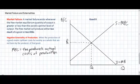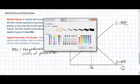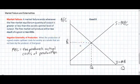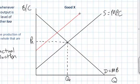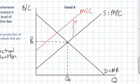A negative externality exists when the social costs of production are greater than the private costs. We can add a second marginal cost curve to our graph, positioned above the marginal private costs of production. This curve we will label marginal social cost (MSC). Notice that the marginal social cost of production is greater than the marginal private costs, implying that there are external costs not borne by the producer of this good but borne by society as a whole.